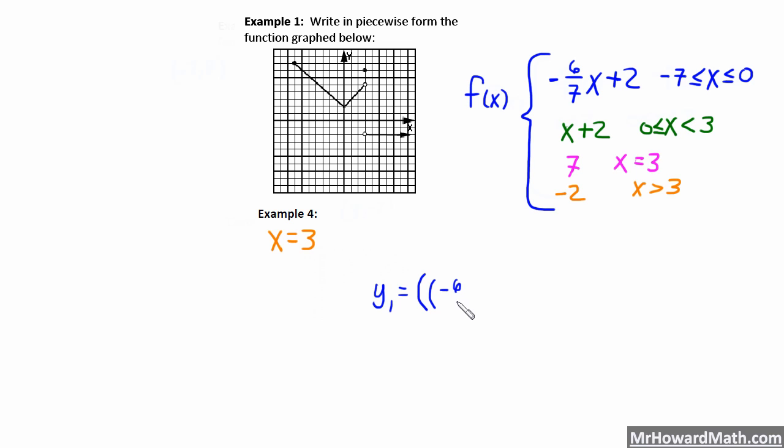So I actually did another parenthesis, negative 6 over 7, close parenthesis, x plus 2, and then close parenthesis to finish the full function. This parenthesis is just for the fraction. We always put parenthesis around our fractions. And then this outer parenthesis is for the whole function itself.